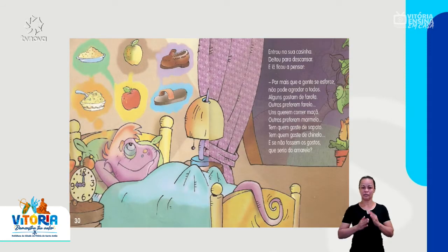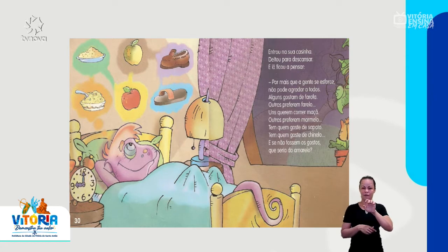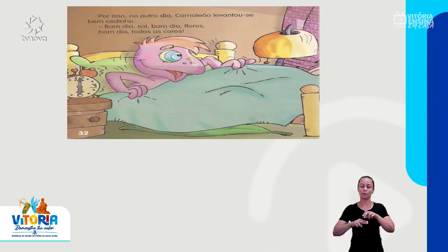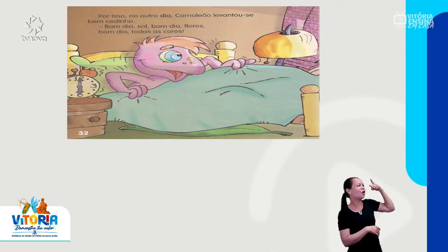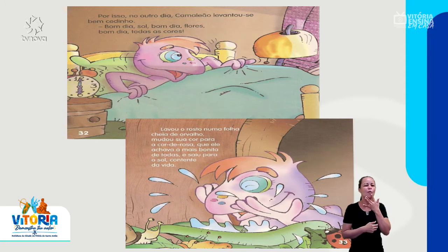Entrou na sua casinha, deitou para descansar, e lá ficou a pensar. Por mais que a gente se esforce, não pode agradar a todos. Alguns gostam de farofa, outros preferem farelo. Uns querem comer maçã, outros preferem marmelo. Tem quem goste de sapato, tem quem goste de chinelo. E se não fossem os gostos, o que seria do amarelo? Por isso, no outro dia, camaleão levantou-se bem cedinho. Bom dia, sol. Bom dia, flores. Bom dia, todas as cores. Lavou o rosto numa folha cheia de orvalho, mudou sua cor para a cor de rosa, que ele achava a mais bonita de todas, e saiu para o sol contente da vida.